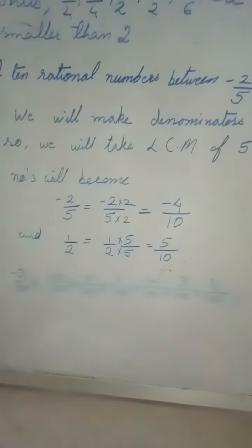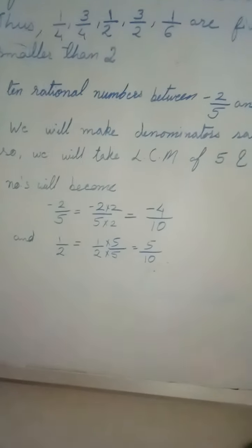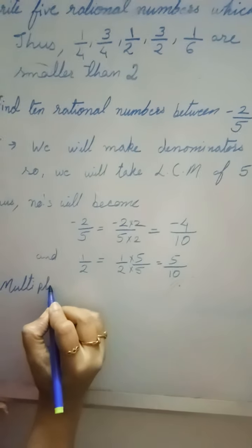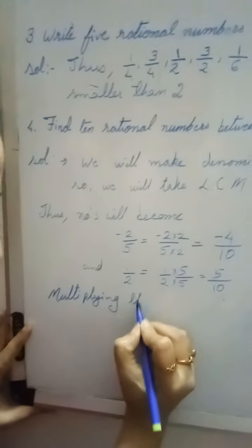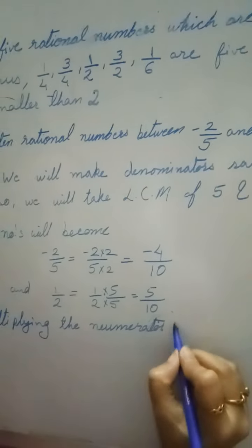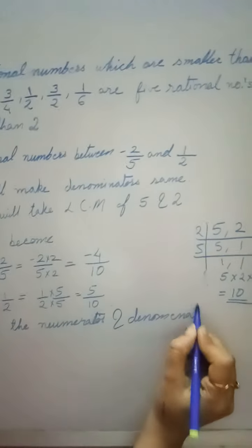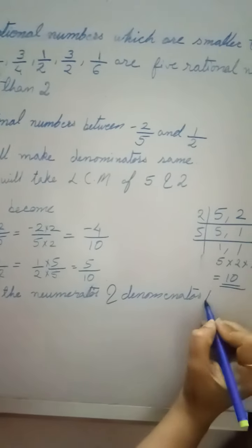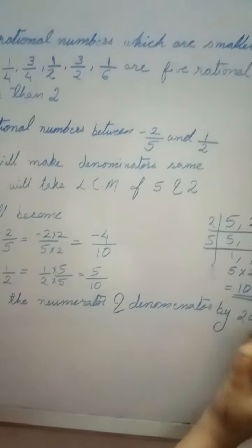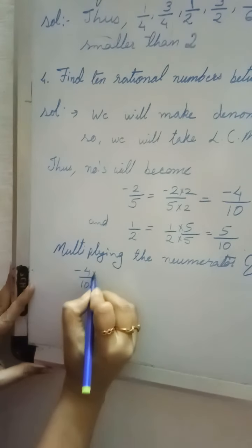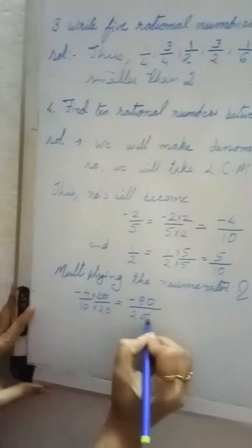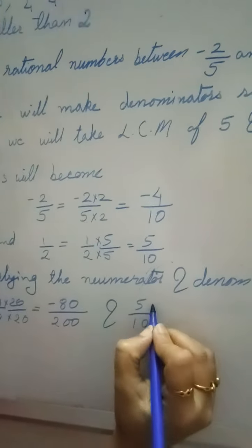Since we are not getting 10 rational numbers, we will again multiply the numerator and denominator by a bigger number. Always go for a bigger number — that makes your work easy. I will choose 20. So -4/10 multiplied by 20/20 gives -80/200, and 5/10 multiplied by 20/20 gives 100/200.